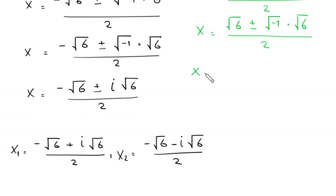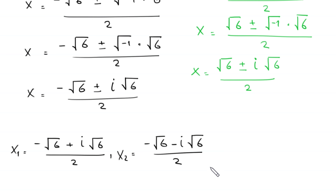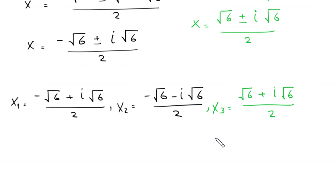Since root of negative 1 equals i, we get x equals root 6 plus or minus i times root 6, divided by 2. Therefore x₃ equals root 6 plus i times root 6, divided by 2, and x₄ equals root 6 minus i times root 6, divided by 2. So we have four solutions for this equation.